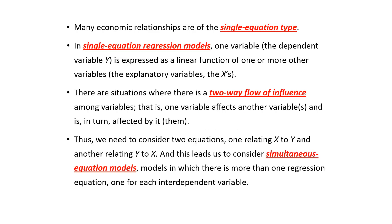In many relationships, we have what's called a single equation type. For example, in this simple linear regression model, we have just one equation — a single equation. In this single equation, we have a dependent variable, which is y, and y is represented using a linear function in the explanatory variable x. So in a single equation regression, we have just one dependent variable, one y, and this y is represented as a function in some explanatory variables, which are the x.